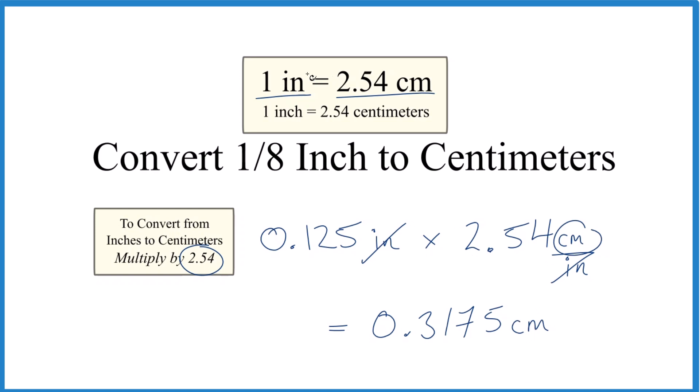We also know that when we go from 1 inch to centimeters the number gets larger. Just like when we went from 0.125 inches to these centimeters here, we got a larger number. That helps us know that we correctly converted 1 eighth inch to centimeters.